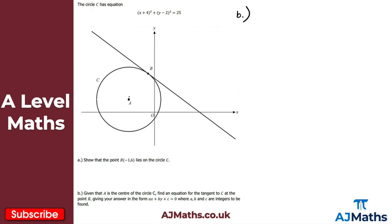To find the equation of the tangent, if we know the center A, we can find the gradient of the radius. From that, knowing the radius and tangent are perpendicular, we find the perpendicular gradient, and since we know the coordinates of point B, we can find the equation of the tangent. Let's do that step by step, starting by finding the gradient of the radius.